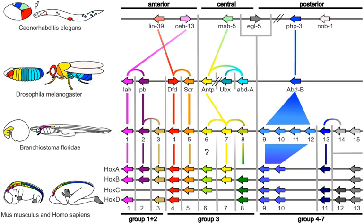New morphological features and ultimately new species are produced by variations in the toolkit, either when genes are expressed in a new pattern, or when toolkit genes acquire additional functions. Another possibility is the Neo-Lamarckian theory that epigenetic changes are later consolidated at gene level, something that may have been important early in the history of multicellular life.